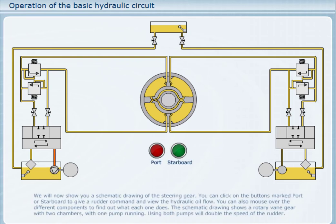We will now show you a schematic drawing of the steering gear. You can click on the buttons marked Port or Starboard to give a rudder command and view the hydraulic oil flow. The schematic drawing shows a rotary vane gear with two chambers with one pump running. Using both pumps will double the speed of the rudder.